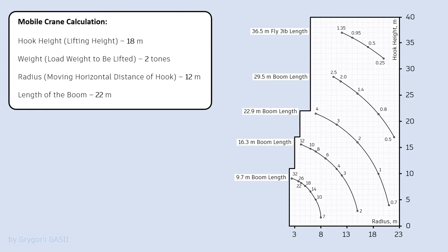Also in different countries, they may have different designs, but the principle of their use is the same for all. Usually, horizontal axis is the moving horizontal distance of the hook in meters. The vertical axis is hook lifting height in meters. The curves in the chart represent the boom length and lifting load capacity.